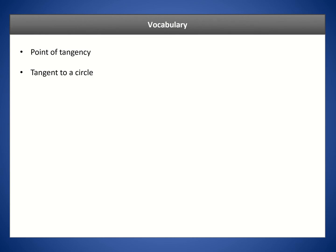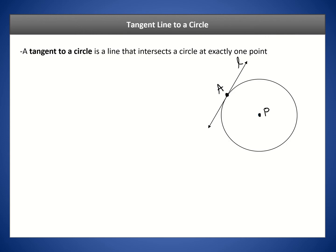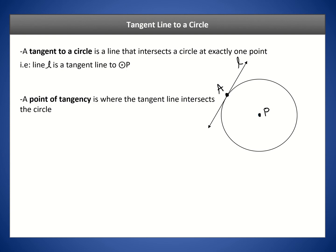Our vocabulary: what is a tangent and what is the point of tangency? A tangent to a circle is a line that intersects a circle at exactly one point. The point where it crosses is called the point of tangency. You can see that the tangent line L is the actual tangent to circle P, and the point of tangency is point A, which is where the tangent line intersects the circle.